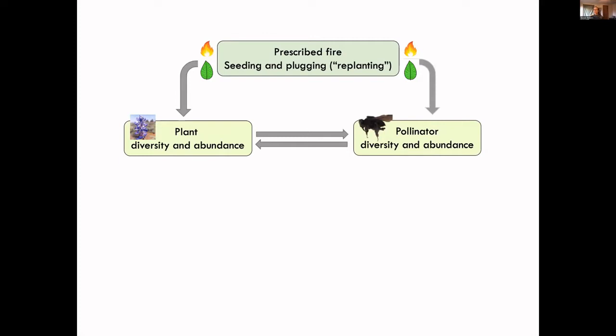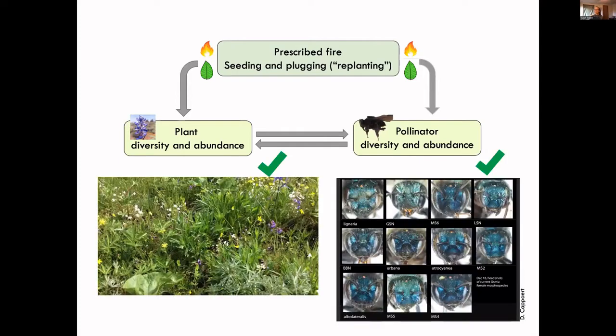One is the use of prescribed fire to prepare sites. The second is the use of seeding and replanting or plugging of seedlings of native forbs to reintroduce native forb diversity to a site. The aim of these two actions is to promote plant diversity and abundance, and hopefully concomitantly increase pollinator diversity and abundance.